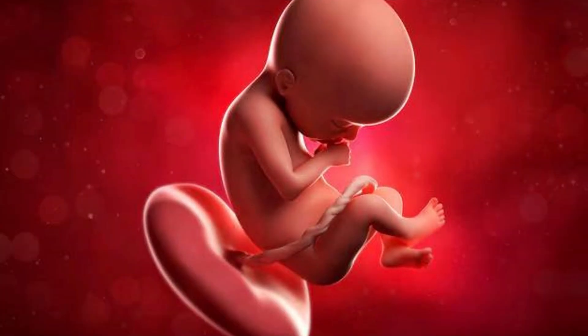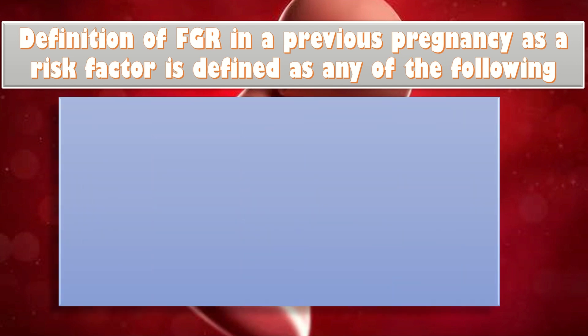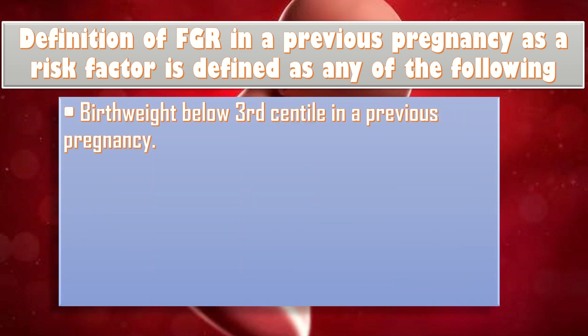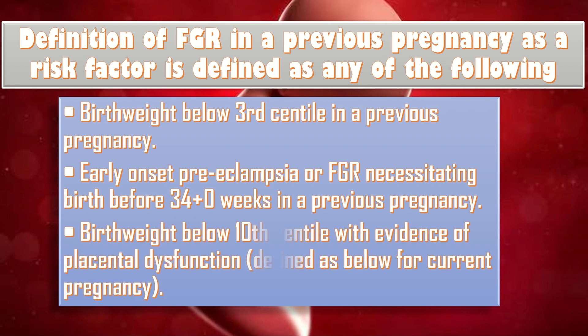The definition of fetal growth restriction in a previous pregnancy as a risk factor includes any of the following: birth weight below the 3rd centile in a previous pregnancy; early-onset preeclampsia or fetal growth restriction necessitating birth before 32 weeks in a previous pregnancy; or birth weight below the 10th centile with evidence of placental dysfunction, as defined for the current pregnancy.